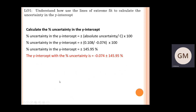To get the percentage uncertainty using the shorter method, the technique is the same: absolute uncertainty divided by your value of c, times 100. Substituting the magnitude of the absolute uncertainty divided by c times 100, regardless of sign, gives plus or minus 145.95%. That's your two marks in the exam. We can now express the y-intercept with the associated percentage uncertainty: your y-intercept value with its unit, plus or minus your percentage uncertainty. Pause and copy down this final worked example.